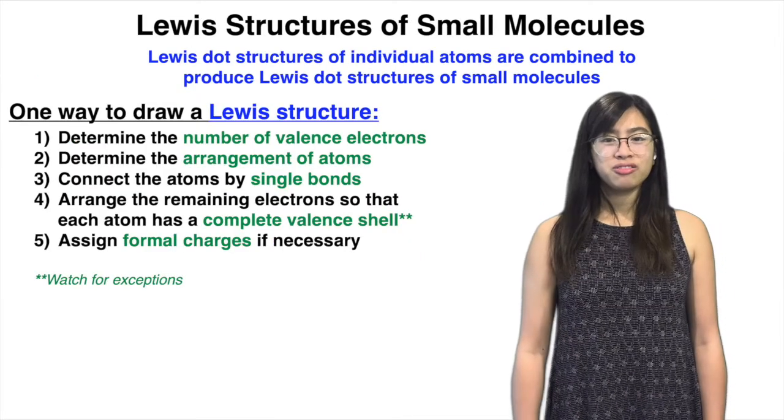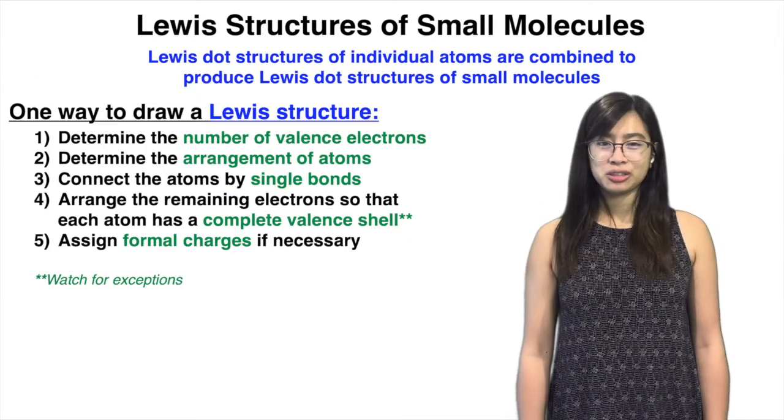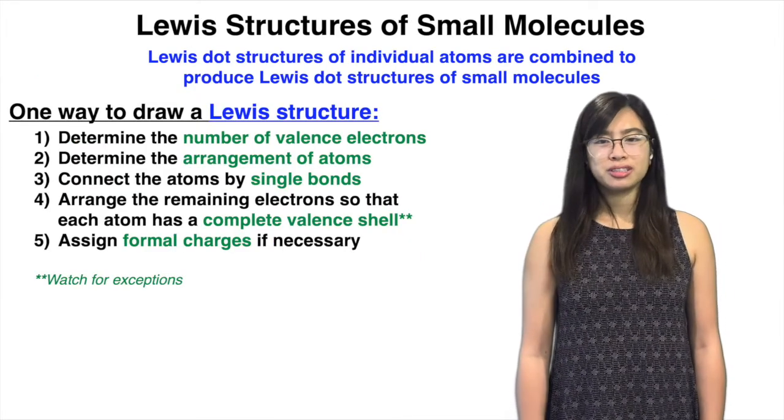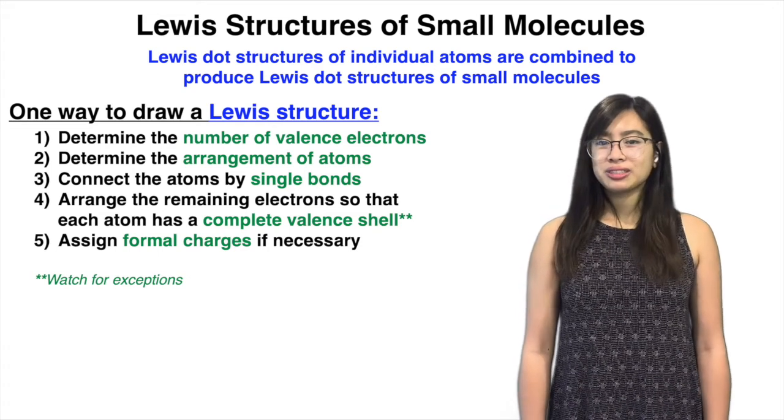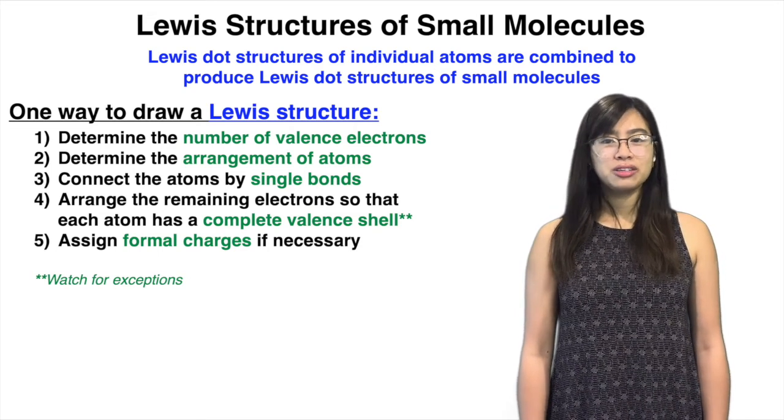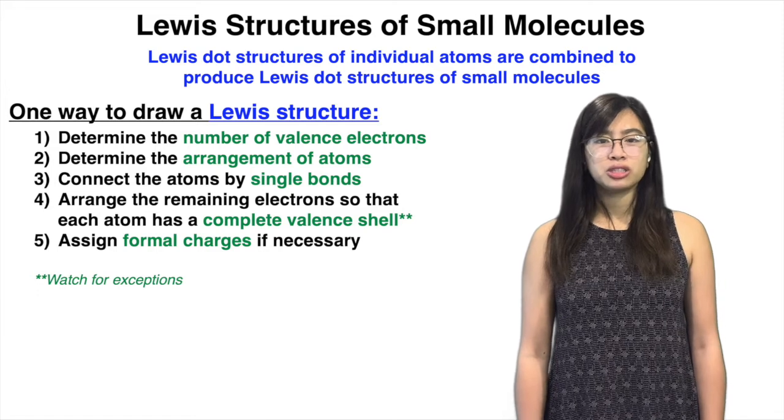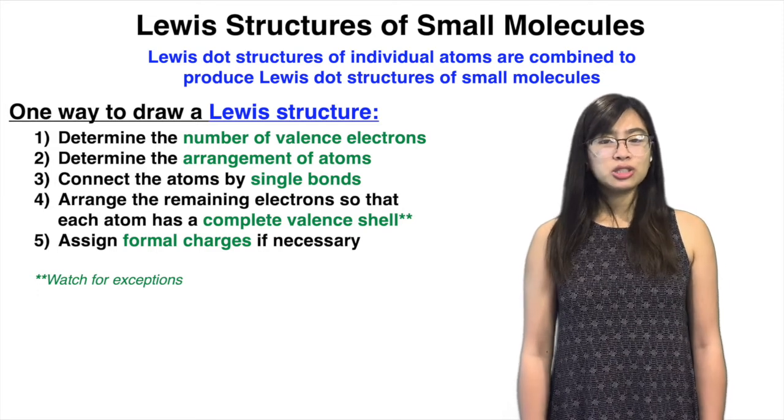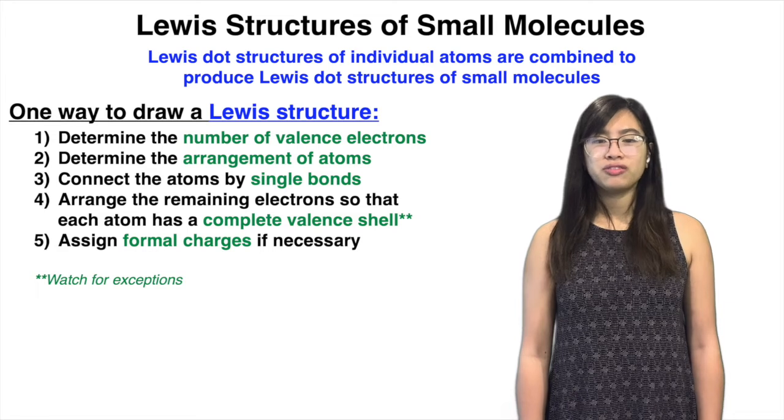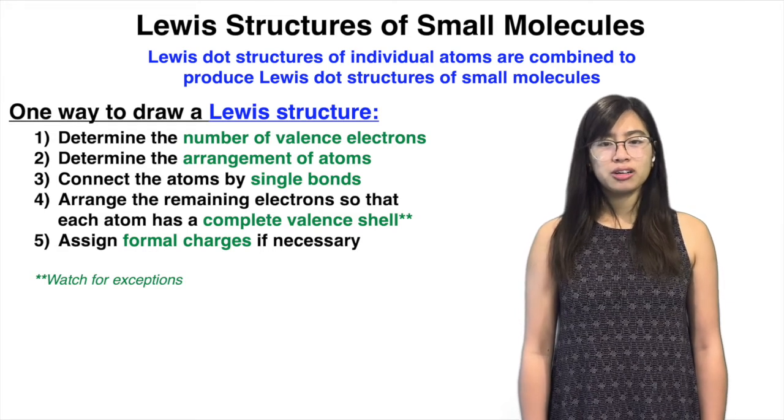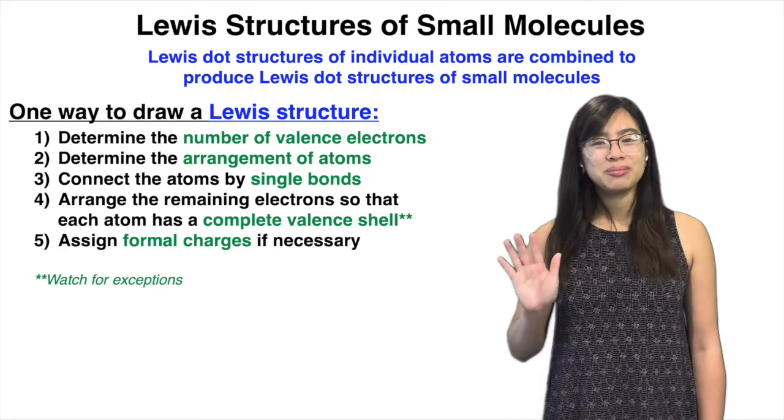So knowing how to draw molecules with their valence electrons is a super important skill to have down in organic chemistry. Lewis dot structures of individual atoms are combined to produce Lewis dot structures of small molecules. And such drawings are based on ensuring that each atom within the molecule fulfills the octet rule. So one way to draw a Lewis structure consists of five steps.